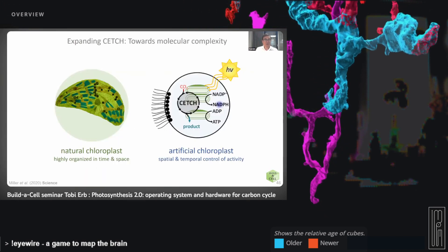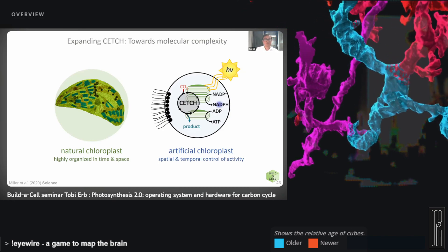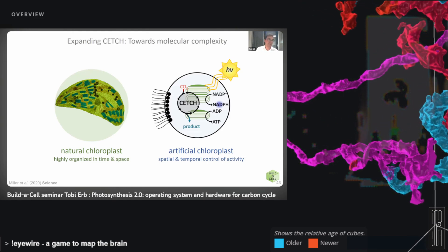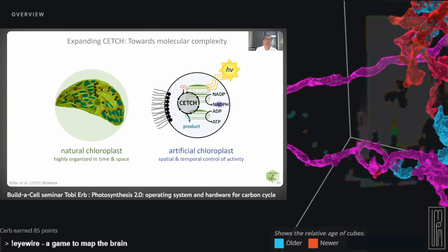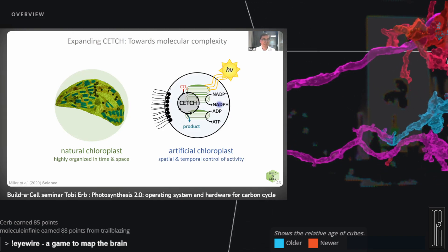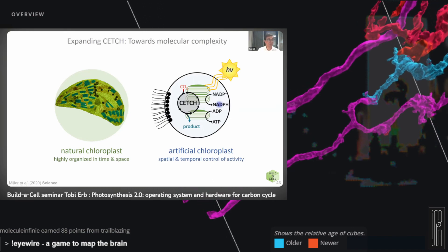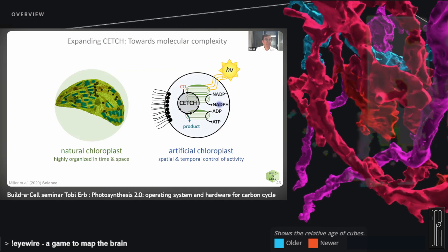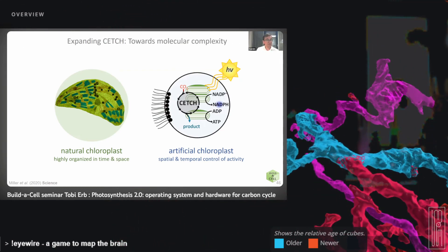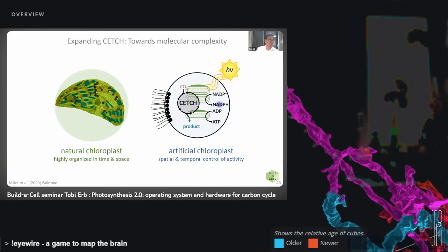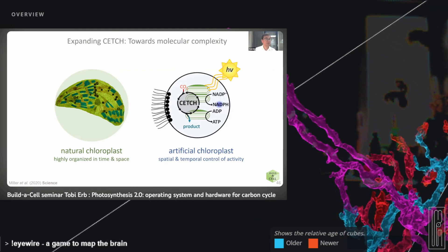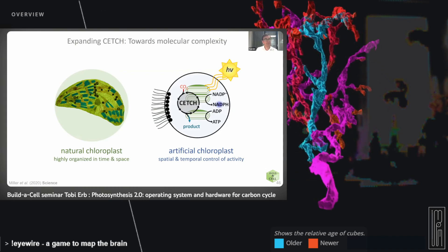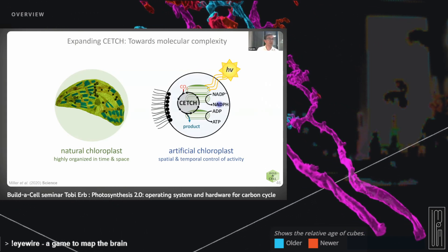I want to quickly mention molecular complexity. If you think about the chloroplast and how photosynthesis is organized, it's not just a bag of enzymes thrown together — it's highly organized in time and space. The chloroplast has elements using light as an energy source to produce NADPH and ATP, and elements where CO2 fixation happens — coordinated in a three-dimensional structure where starch is also being built. It's a truly organized, complex molecular machine.